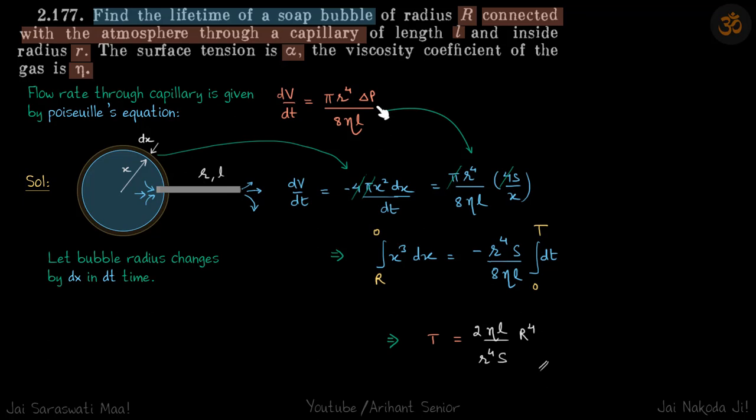Delta P is the pressure difference across the capillary. R is the radius of the capillary. L is length of capillary and Eta is viscosity coefficient of the gas. So this is the volume flow rate.